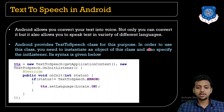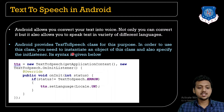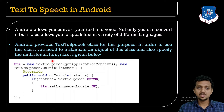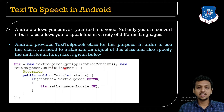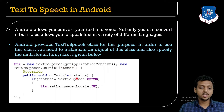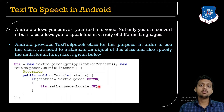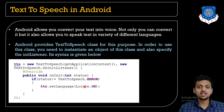Android provides the TextToSpeech class for this purpose. To use it, you need to instantiate an object of this class and specify the init listener. The syntax is: TextToSpeech tts = new TextToSpeech(getApplicationContext(), new TextToSpeech.OnInitListener). Once initiated, it checks for errors. If there are none, it sets the locale — for example, Locale.UK — which is the default language for your device. setLanguage() is the method, and Locale.UK is the parameter specifying the language.